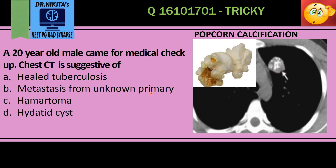We know that popcorn calcification is seen in hematoma — that is why the answer is hematoma. We also know that hydatid cyst in the lung does not calcify, so we rule out hydatid cyst. Therefore, hematoma is the right answer.